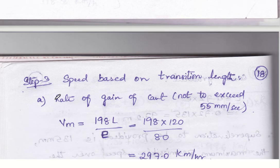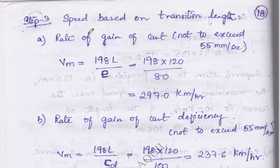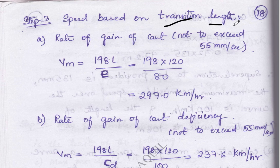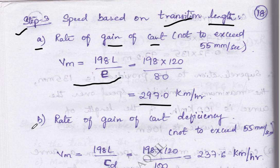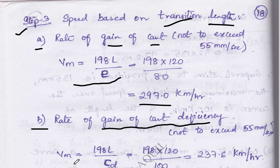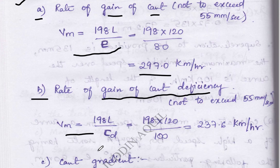Step three: calculate transition length of curve. There are two conditions. First condition: rate of gain of cant — formula is Vm = 198L / E. Substituting the known values gives the result. Second condition: rate of gain of cant deficiency — remember, the first case uses cant and the second uses cant deficiency. Formula is Vm = 198L / CD. Substitute and get the value.